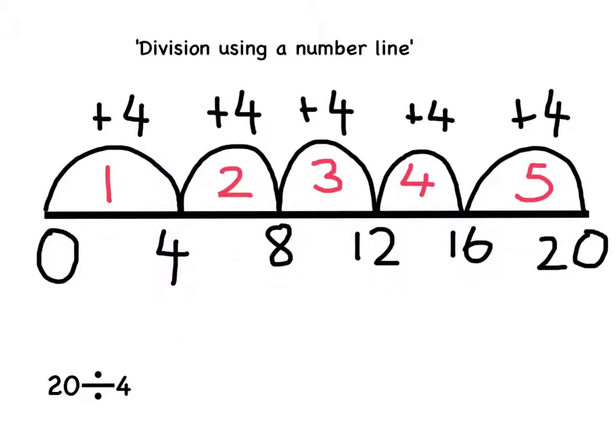This means there are 5 fours in 20. So 20 divided by 4 equals 5.